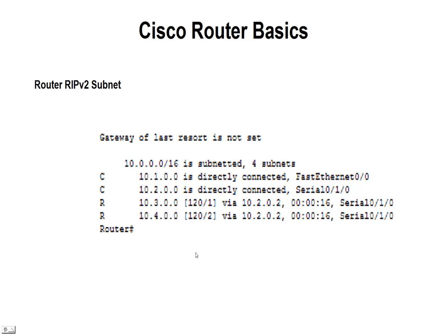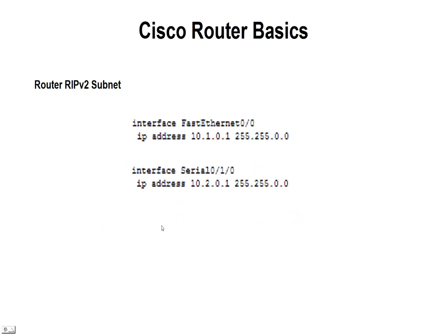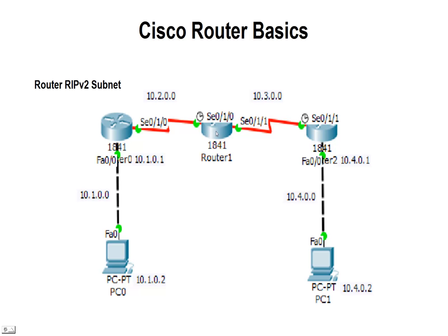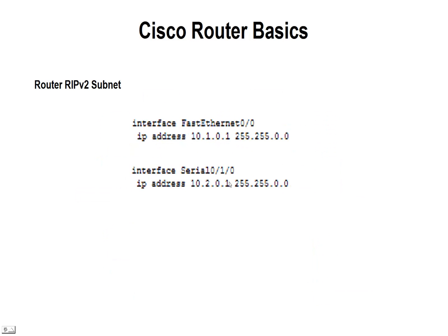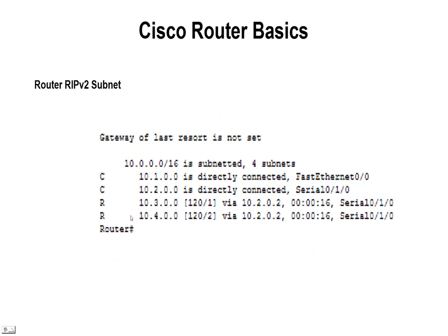If we look at the routing table for router 1, with the other two routers set, we'll see that we have two directly connected networks — 10.1 and 10.2 — and then we have two R entries for the RIP networks that were found: 10.3 and 10.4. Those are the two that are not directly connected to the router. You can see 10.3 is behind the second router and 10.4 is behind the third router. These two networks are forwarded to router 1 using RIP version 2, so the R's designated for both of those show they've been transmitted using that RIP protocol.